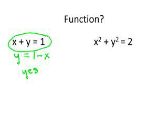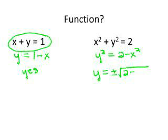For the second one, x² + y² = 2: solving for y, we subtract x² from both sides and take the square root, giving us y = ±√(2 − x²). When we substitute in values for x, we could get a plus or a minus, so not every x yields one y — we could get two y's. So this one is not a function.